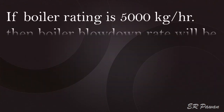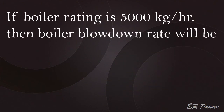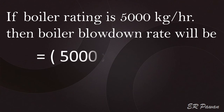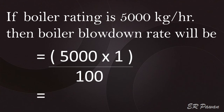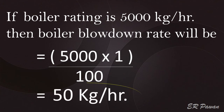If the boiler rating is 5,000 kg per hour, then the boiler blowdown rate will be: 5,000 kg/hr × 1 ÷ 100 = 50 kg per hour.